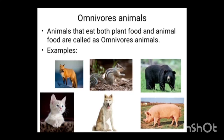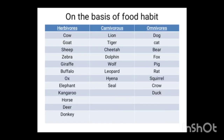Now, omnivores animals. Some of our friends took food from both counters. They are animals that eat both plant food and animal food, and they are called omnivores. For example, fox, squirrel, bear, pig, dog, cat, etc. On the basis of food habit, we can divide animals into three: herbivores, carnivores, and omnivores.